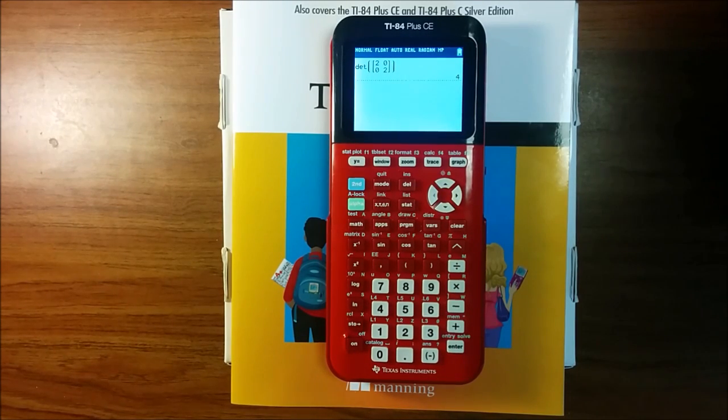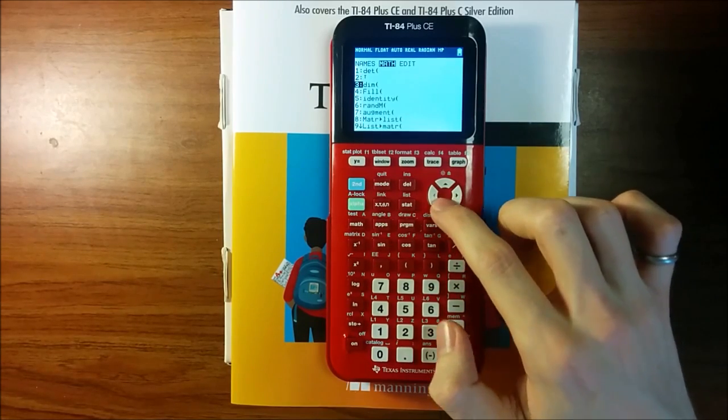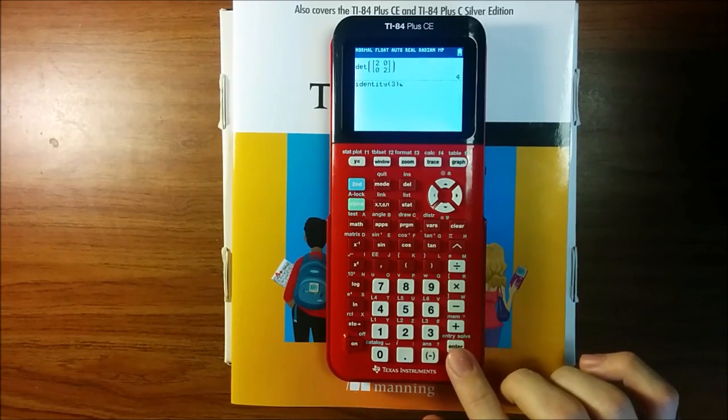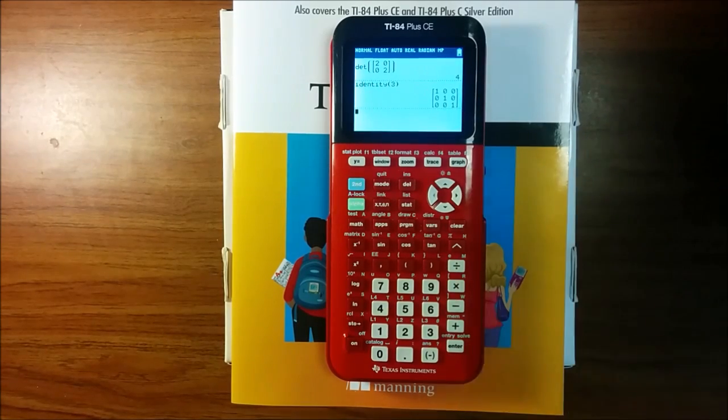You can also do things like get an identity matrix. So to show you one more command, I'll go to identity in the matrix menu and choose 3. This will give you a 3x3 identity matrix, which has a diagonal matrix of 1s on the diagonal and 0s everywhere else.